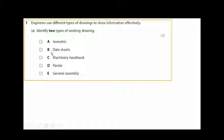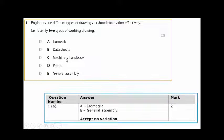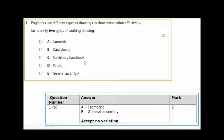Identify two types of working drawings. From video 1, two types of working drawings — the answer is going to be isometric, which is 3D, and general assemblies, which are 2D. Data sheets, machinery handbooks, and Pareto are not types of working drawings; they're something else.